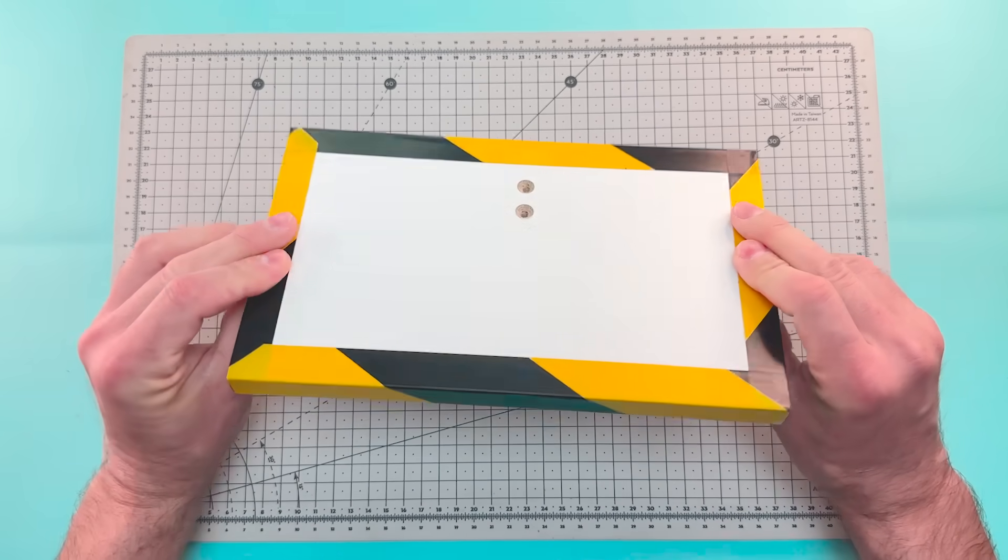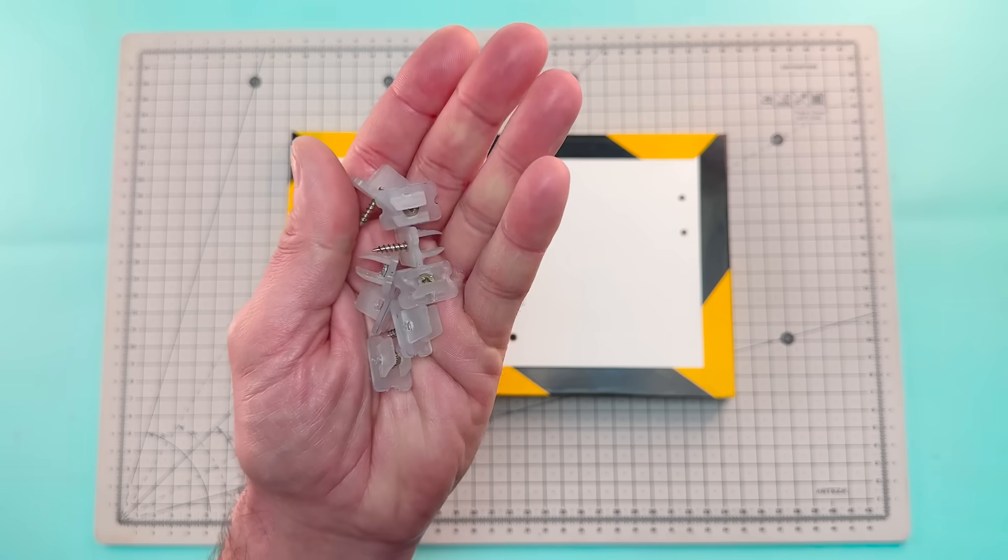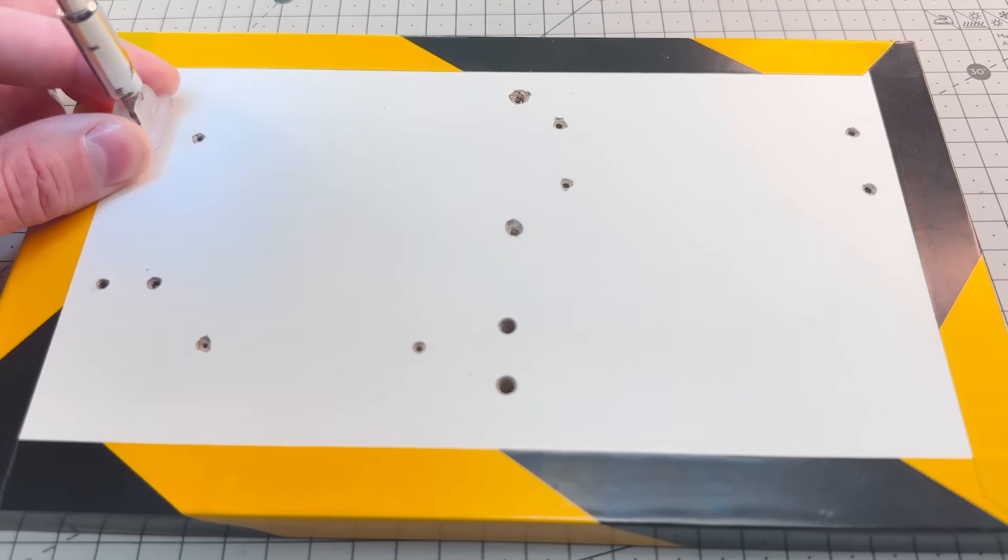Now we're going to attach the components to this small wooden structure. We've already made the holes we'll need, but you can drill them to fit your own parts.